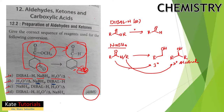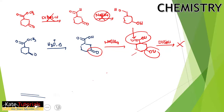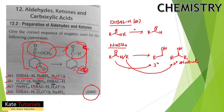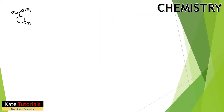We do not get the required product from option B, so B is also wrong. Now let us try option C. First, NaBH4 is added to the starting material containing an ester (COOCH3) and a ketone.